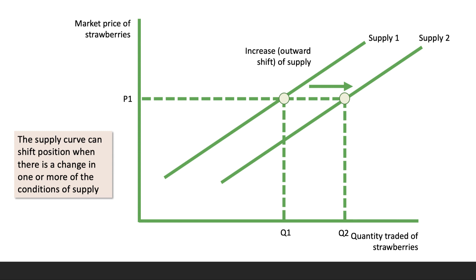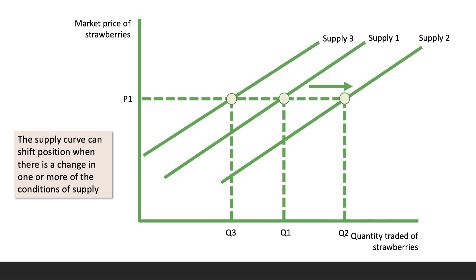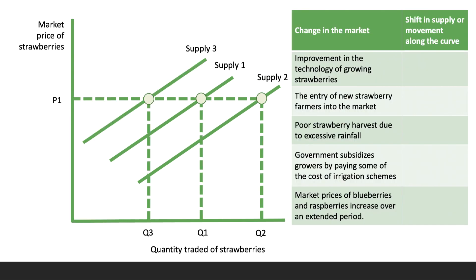Conversely, supply could move to the left — something must have happened which means the producer can't supply as many strawberries at a given price, suggesting costs must have gone up. We call that an inward shift or a decrease in supply. So the supply curve can shift either to the left — an inward shift — or to the right — an outward shift.